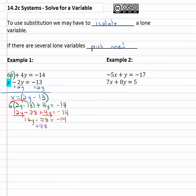Solve the two step equation by adding seventy eight to both sides, giving us 16y equals sixty-four. Divide both sides by sixteen and y is equal to four.